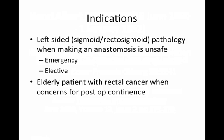So what are the indications for Hartmann's procedure? It's pretty straightforward — any left-sided, which is normally a sigmoid or recto-sigmoid pathology, where, when it's resected, making an anastomosis would be unsafe.